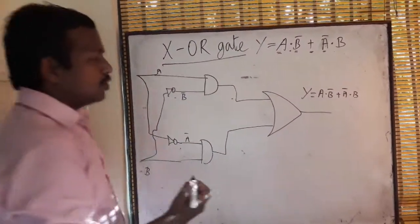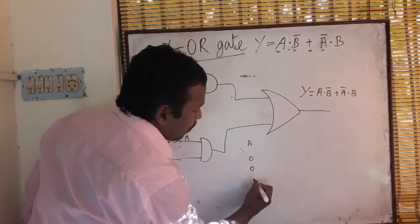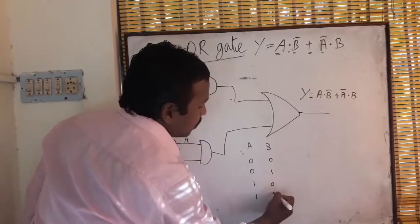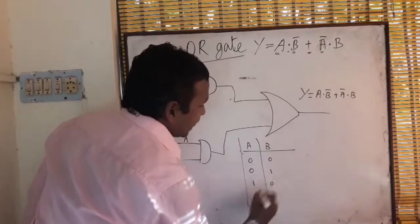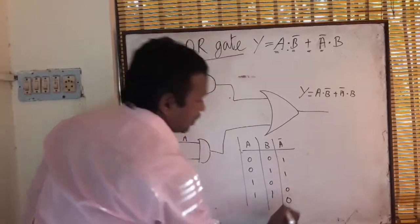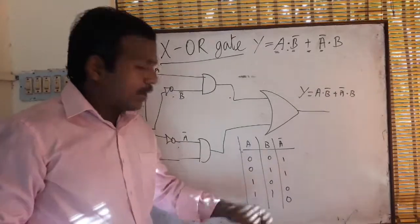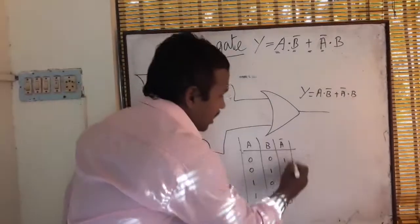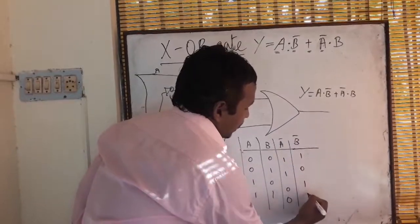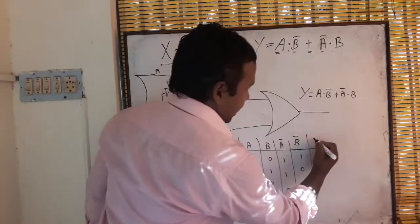Now we will see the truth table. A is equal to 0, 0, 1, 1 and B is 0, 1, 0, 1. Now we will see what is Ā — A̅ is equal to 1, 1, 0, 0. That means NOT A: if A is 0 then Ā is 1, if A is 1 then Ā is 0. Again, B̄ will be 1, 0, 1, 0 — opposite to B.